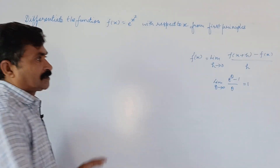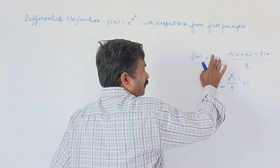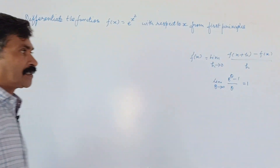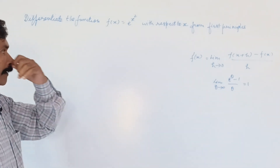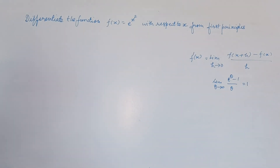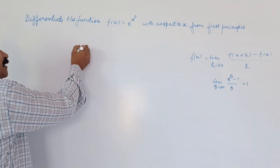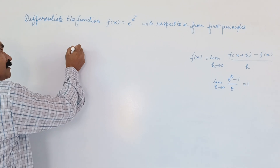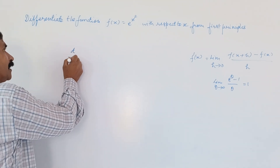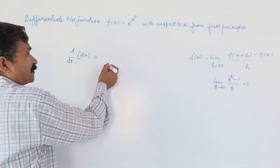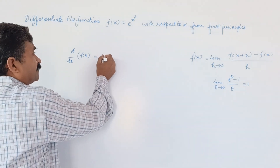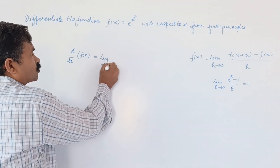First principle is clear to us: limit h tends to 0, f(x+h) minus f(x) upon h. If we apply this to our question, we can write dy/dx as limit h tends to 0.